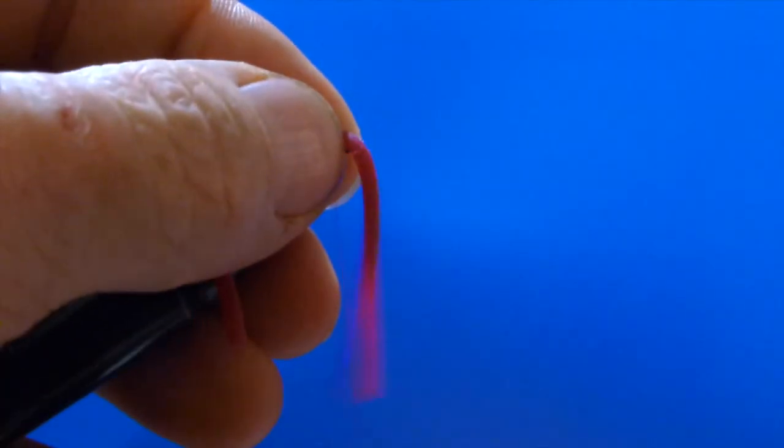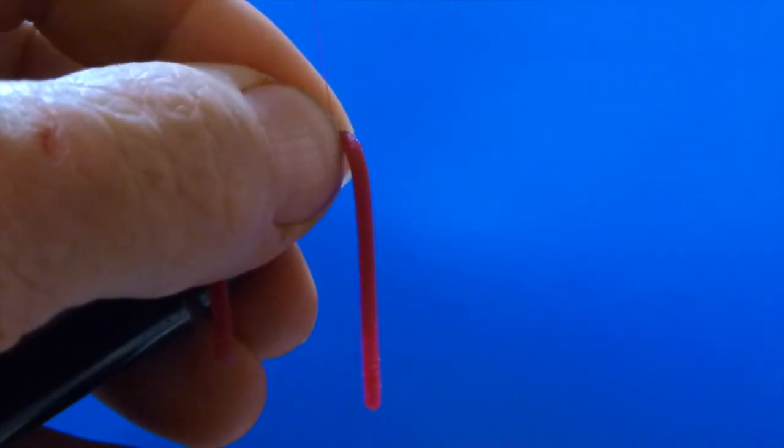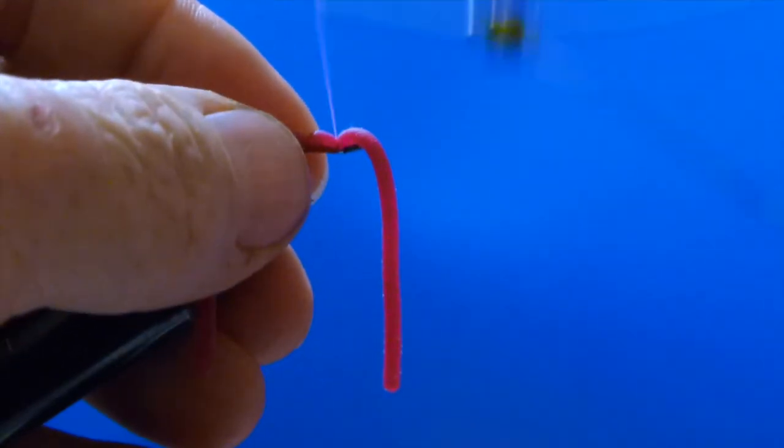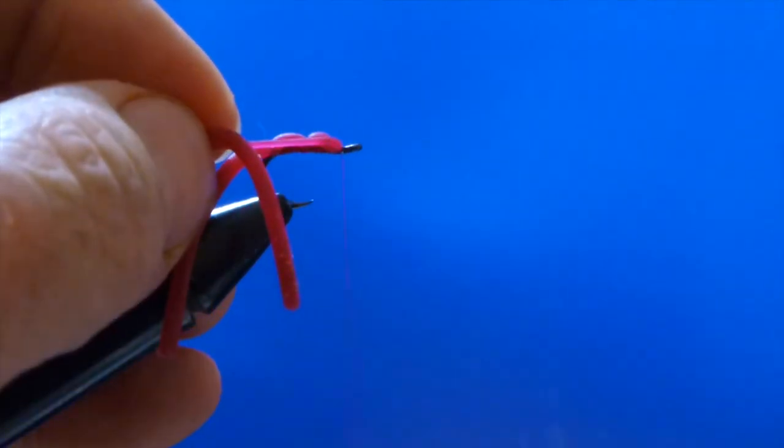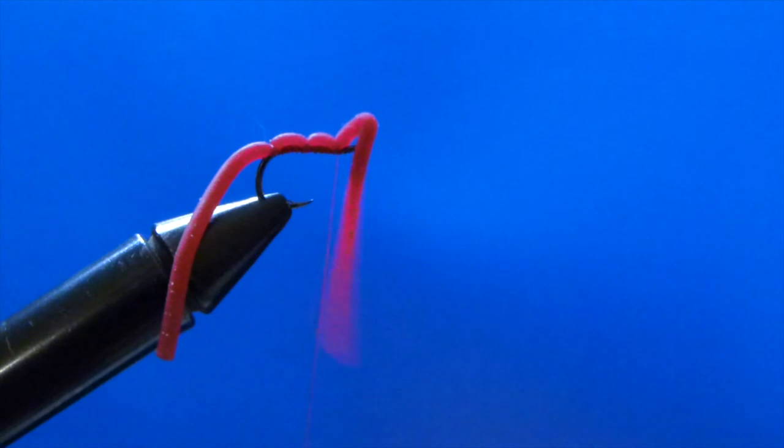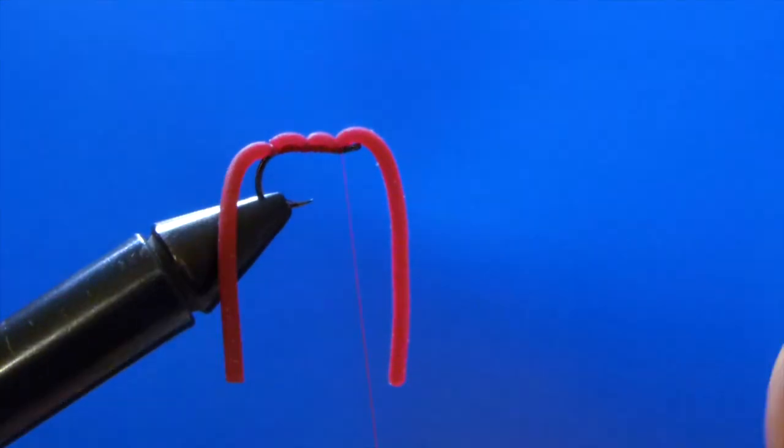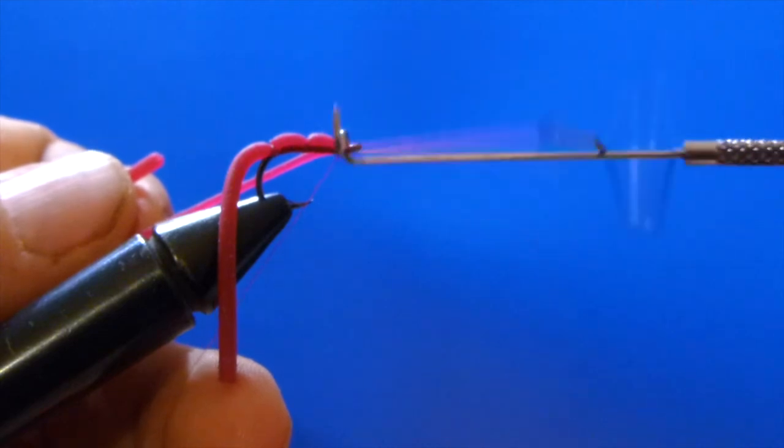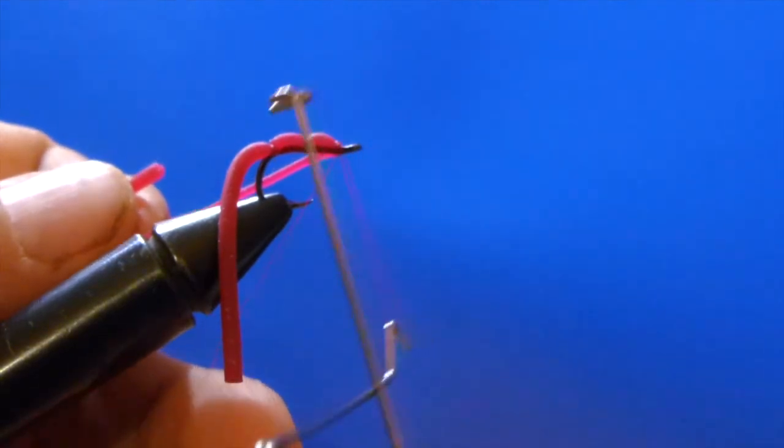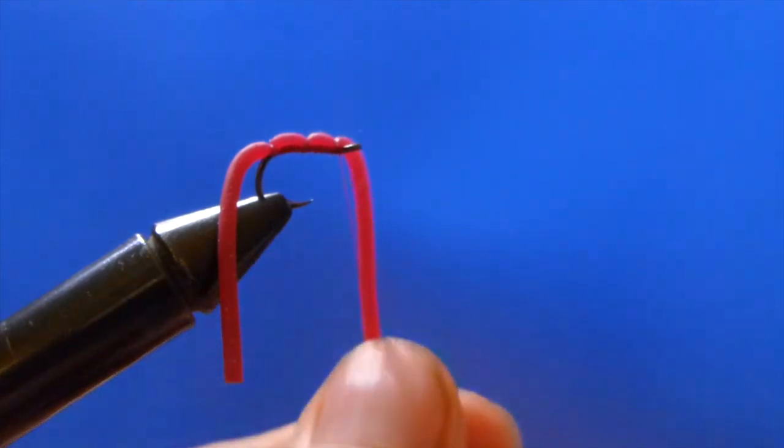Thread forward, tie it in the final time. See how it's trying to twist around. And then we'll tie off the head, give it a quick whip finish, and then we can cut off our tag end.